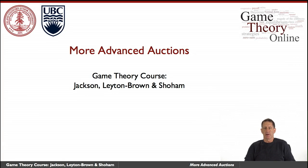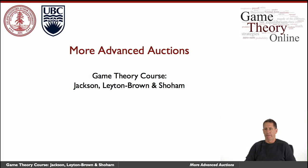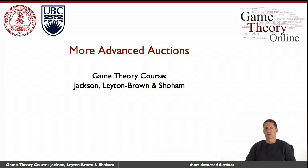Finally, let me speak briefly about combinatorial auctions. These are very interesting both because they are commercially relevant and because they give rise to a host of intellectual issues. What's an example? Imagine an auction for shoes. You could have an auction for left shoes and an auction for right shoes, but that would be very weird because you really don't have a use for only a left shoe or only a right shoe — so you'd want to bid for both together.